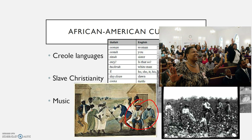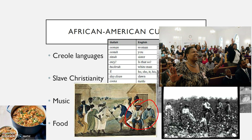Despite some efforts by slave owners to ban slave music, it persisted, and its influence can be seen in African-American music of the modern era. African culture can also be found in food. A distinct hybrid cuisine emerged in slave societies, such as gumbo — a dish combining African okra (both 'okra' and 'gumbo' are African words) with American vegetables, European vegetables, and shellfish. Rice cultivation in North America was also brought by slaves.